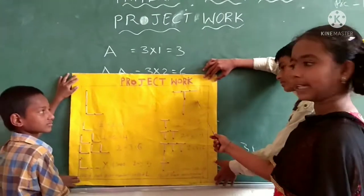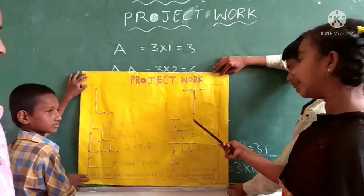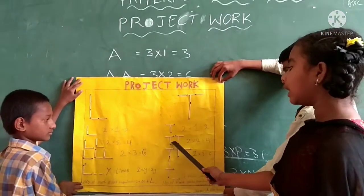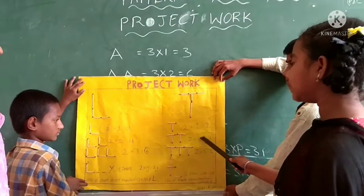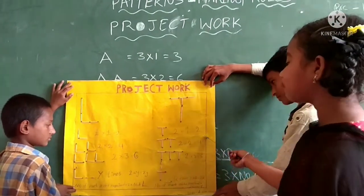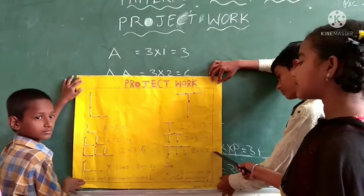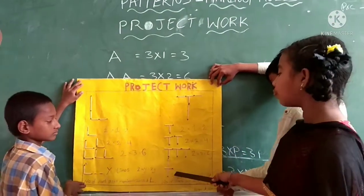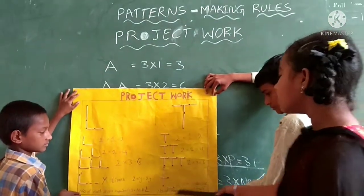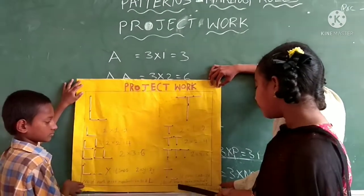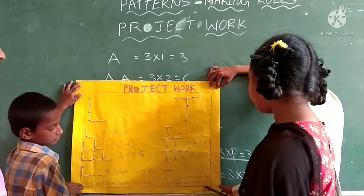The next alphabet is T. If we make 1 T, we need 2 matchsticks. If we make 2 T, that is 2 into 2, equal to 4 matchsticks. If we make 3 T, that is 2 into 3, equal to 6 matchsticks. The rule of T is equal to 2 into R, equal to 2R. So the number of matchsticks required is equal to 2 into the number of T.